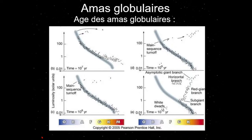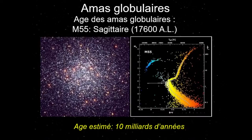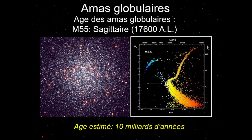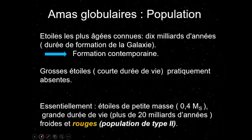Voici le diagramme HR réel de M55 dans le Sagittaire, un amas à environ 17 000-18 000 années-lumière. La photo et son diagramme HR sont superbes. En repérant la position du coude — en prenant la tangente verticale et le point de tangence — on trouve un indice de luminosité permettant de déterminer l'âge de l'amas. On pense qu'il a environ 10 milliards d'années.